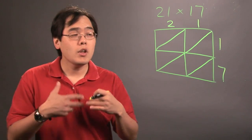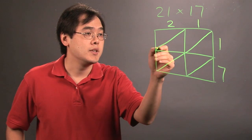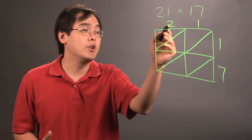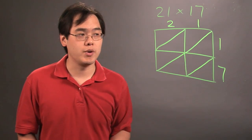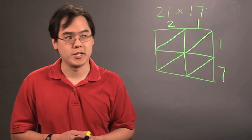Now, the way this method works is part of it, as you can tell, is the setup. Once you've put the numbers where they belong and after you've drawn the diagonals going forward, this is where the multiplication takes place.